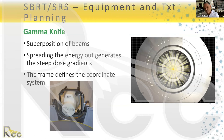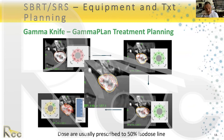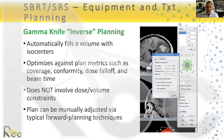Doses are usually prescribed to the 50% isodose line. You can see from examples how many isocenters are needed to achieve 50% conformality to the shape of the targets.